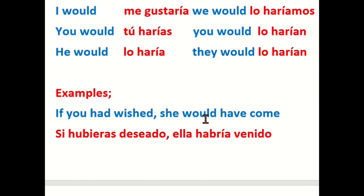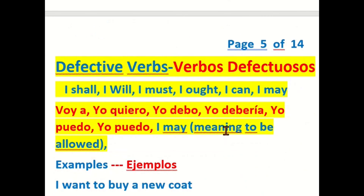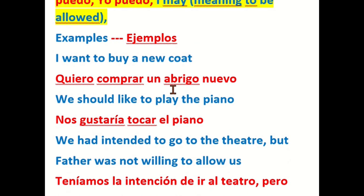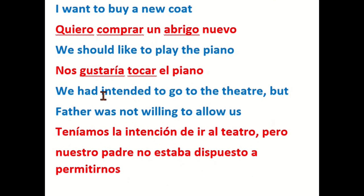An example: If you had wished, she would have come — si hubieras deseado, ella habría venido. Another sample: I want to buy a new coat — quiero comprar un abrigo nuevo. We should like to play the piano — nos gustaría tocar el piano. We had intended to go to the theater but father was not willing to allow us — teníamos la intención de ir al teatro pero nuestro padre no estaba dispuesto a permitirnos.